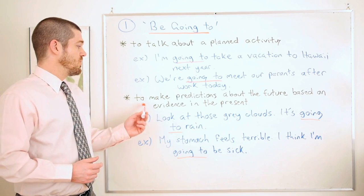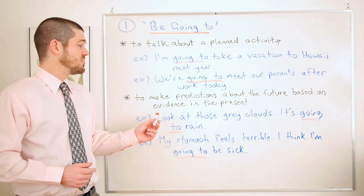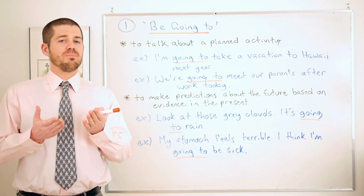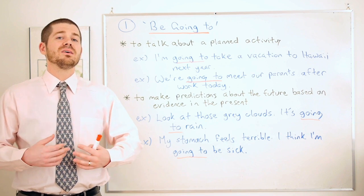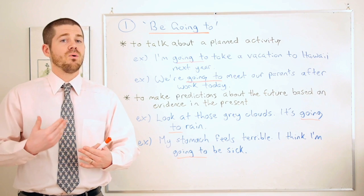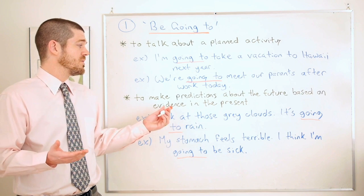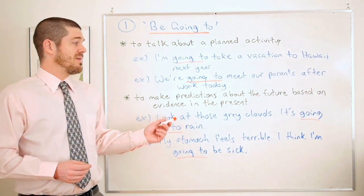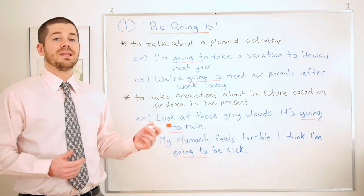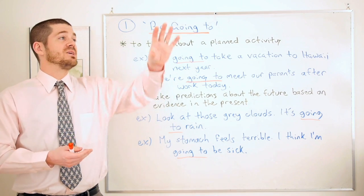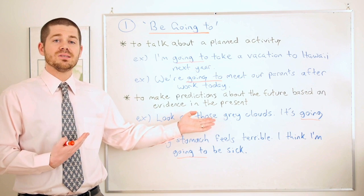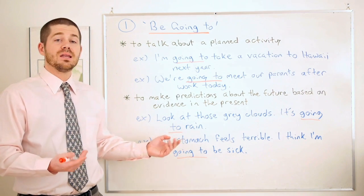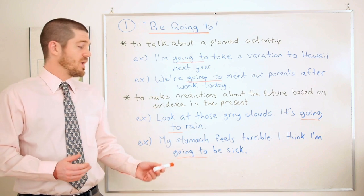Another situation for using 'going to' is to make predictions about the future based on evidence in the present. There's something you can see or hear right now that tells you about the near future — and it's usually predictions about the near future, not a long time away. For example: 'Look at those gray clouds — it's going to rain.' I see gray clouds, and that's evidence that it will rain soon.